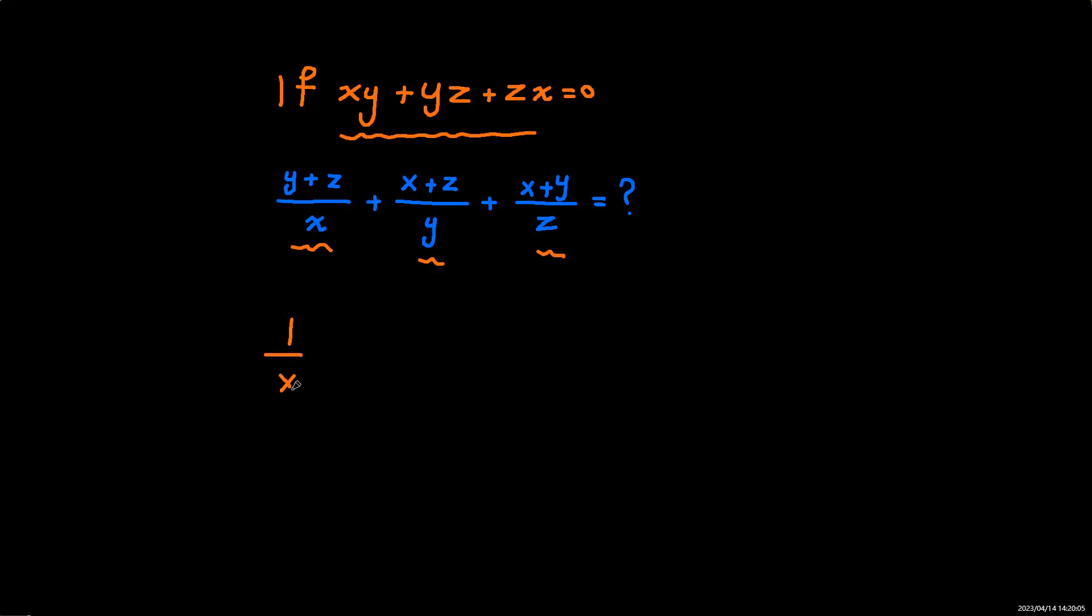What is 1 over x plus 1 over y plus 1 over z? So what we're going to have, of course, this will be x, y, z here. But if you pay attention, the numerator here will be exactly this.